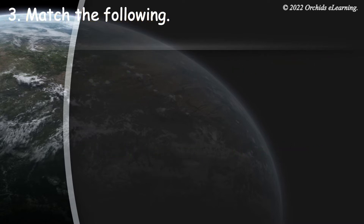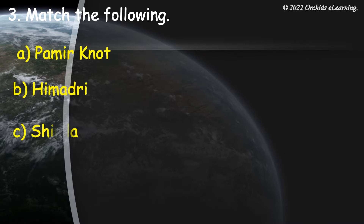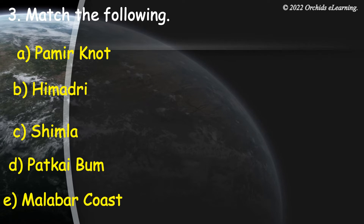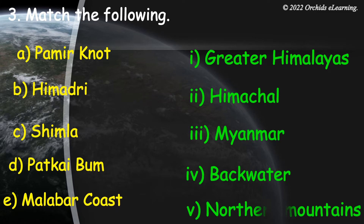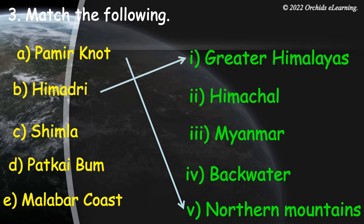Match the following. Column A to Column B: Pamirs knot — Northern mountains; Himadri — Greater Himalayas; Shimla — Himachal Pradesh; Patkai Bum — Myanmar; Malabar coast — backwaters.